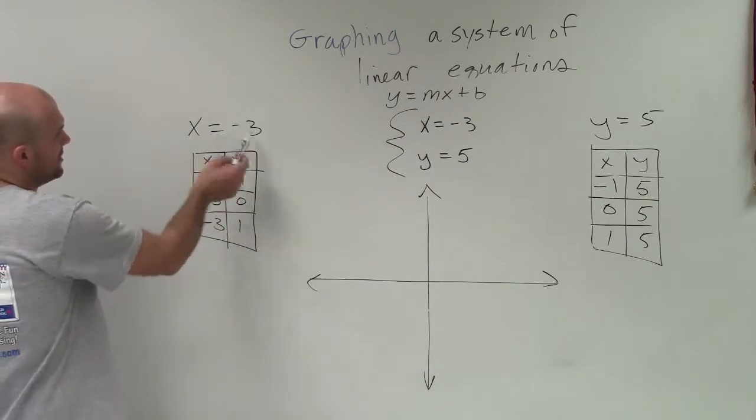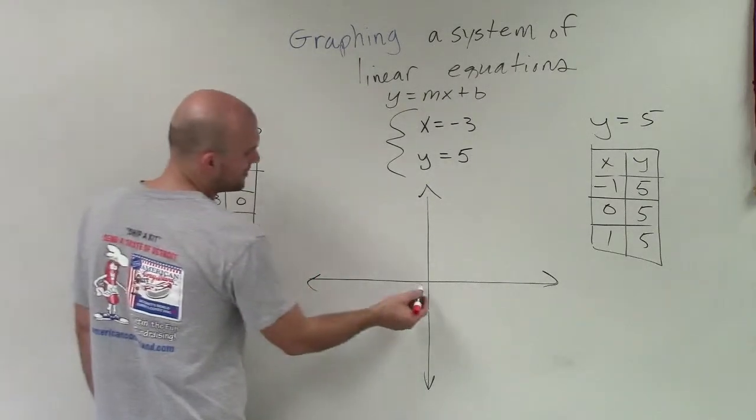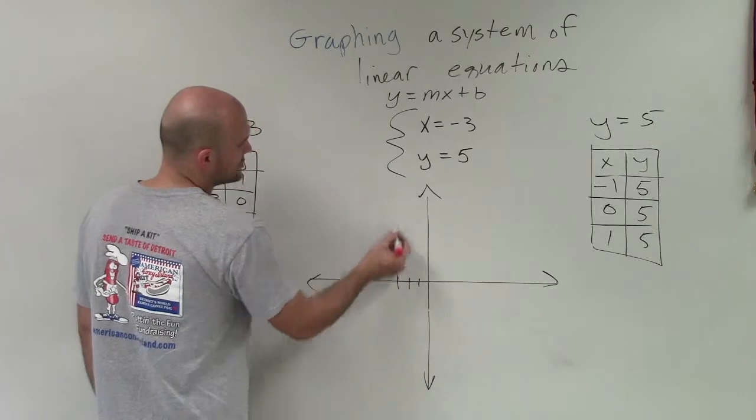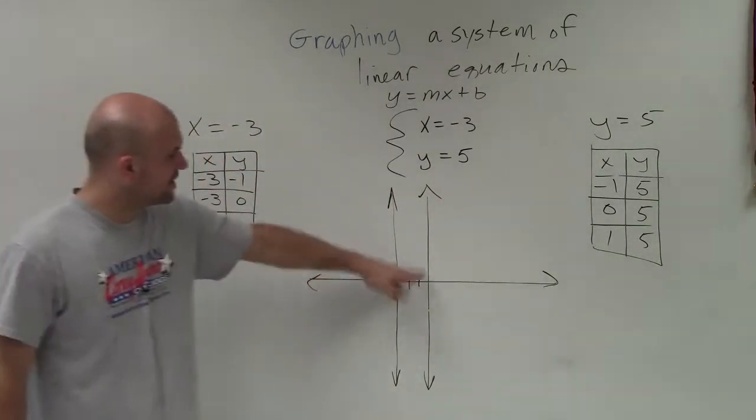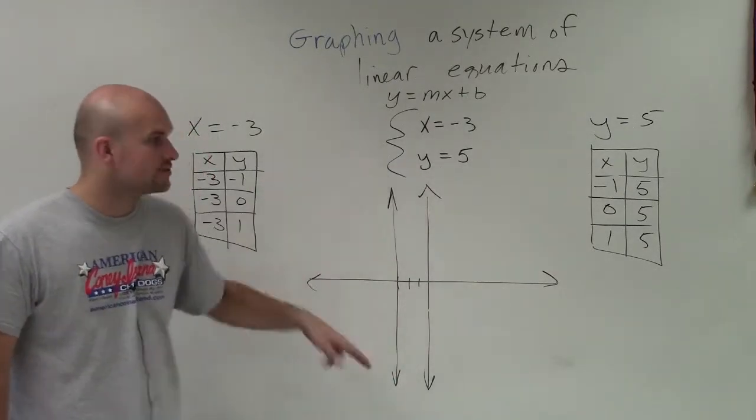If I know that x equals negative 3, x always equals negative 3, I'm going to go over to negative 3 and draw a vertical line. It doesn't matter where the y-coordinate is, x always equals negative 3.